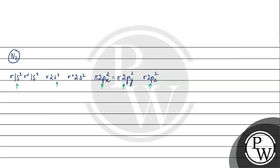For N2, we note that the number of bonding electrons is 10. If we look at the number of antibonding electrons, we have 4. So bond order is half of 10 minus 4, which gives us 3. Bond order of N2 is 3.